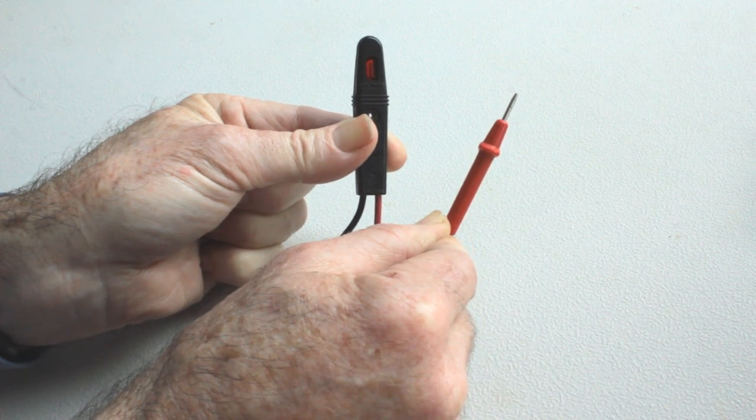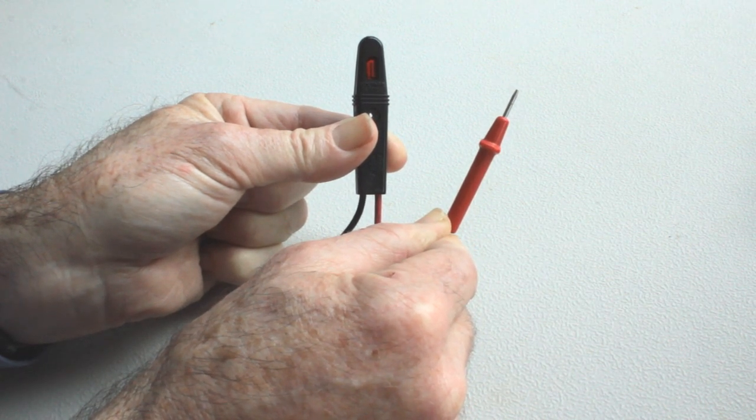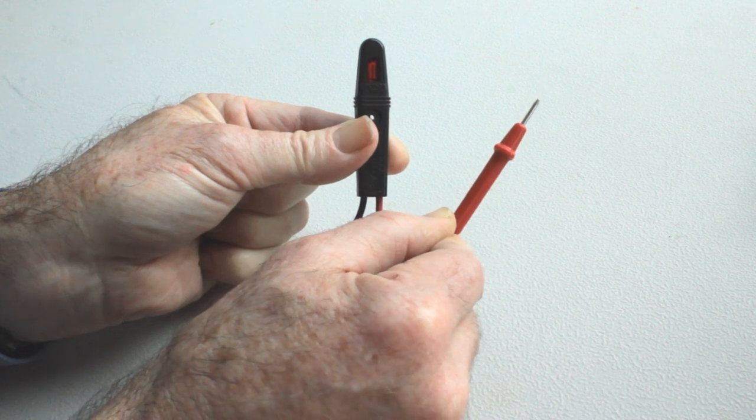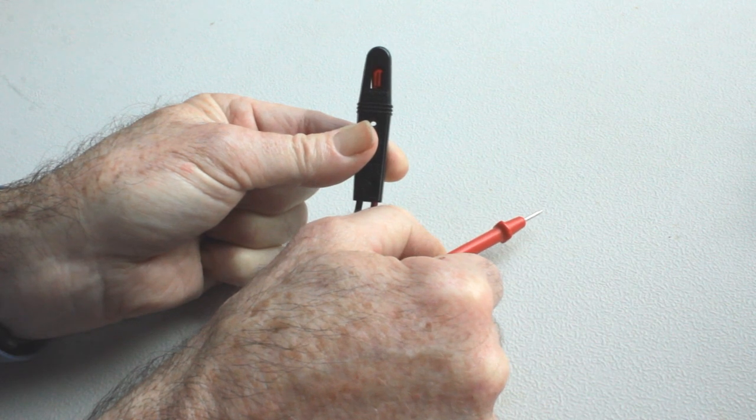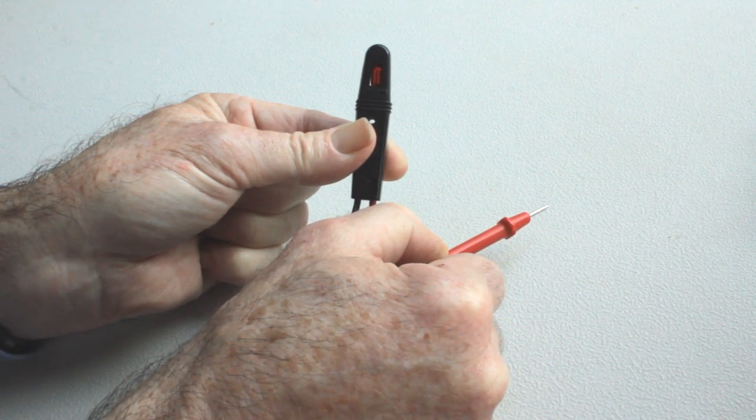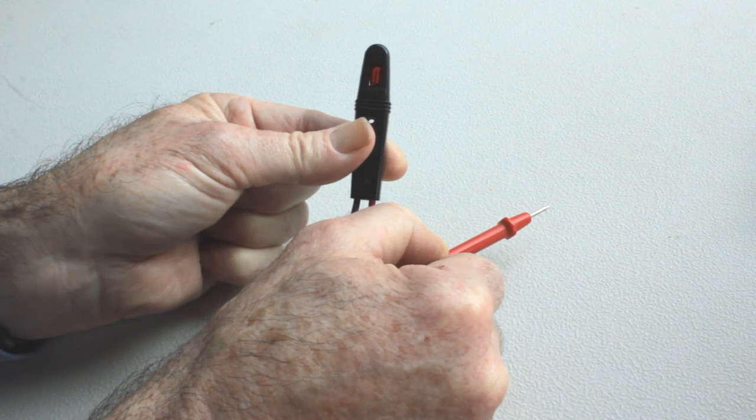It doesn't have to be the red one—it could be the black one. This is the prong that I would touch to a wire or part of a receptacle to see if it was live.